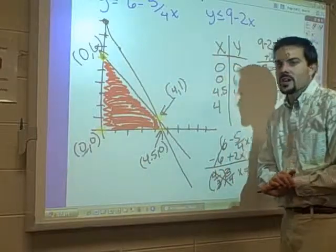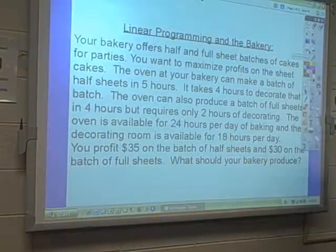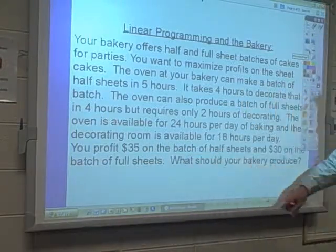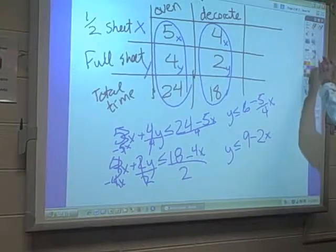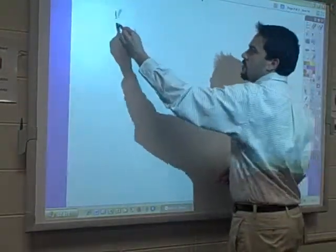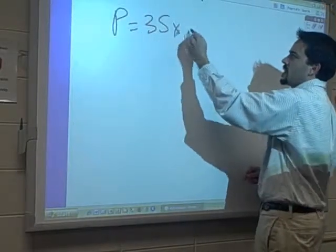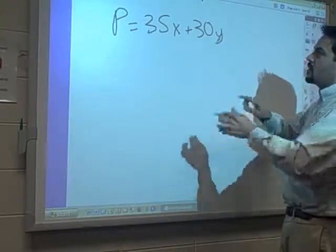Last but not least, we want to check that profitability. Let's go back to our profits. It says that we make $35 on the half sheets and $30 on the full sheets. Our half sheets are x. So our profit equation is $35 on the half sheets, which are our x, and $30 on the full sheets, which are the y.